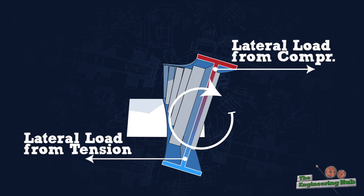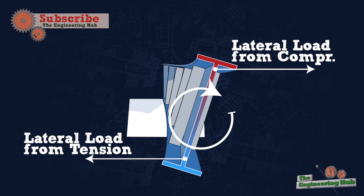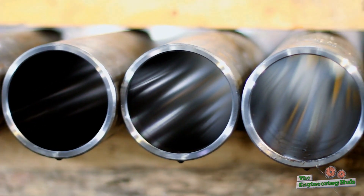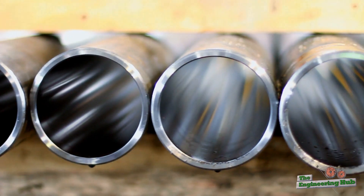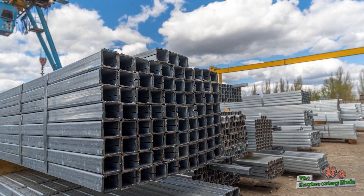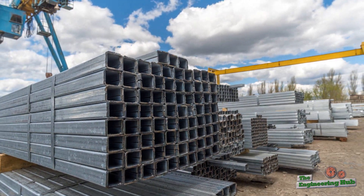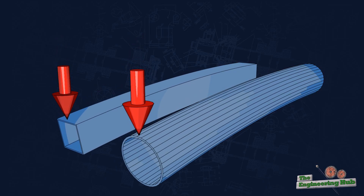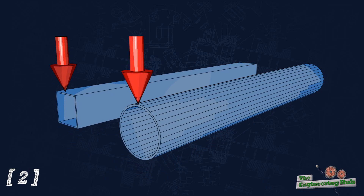Beams that are relatively strong at resisting torsion compared to their bending resistance do not suffer from lateral torsional buckling, because their bending strength is usually exhausted before lateral torsional buckling can be initiated. Such examples are closed sections like pipes or square tubes. Furthermore, these sections have the same stiffness in-plane and out-of-plane, and therefore show no tendency to buckle laterally.